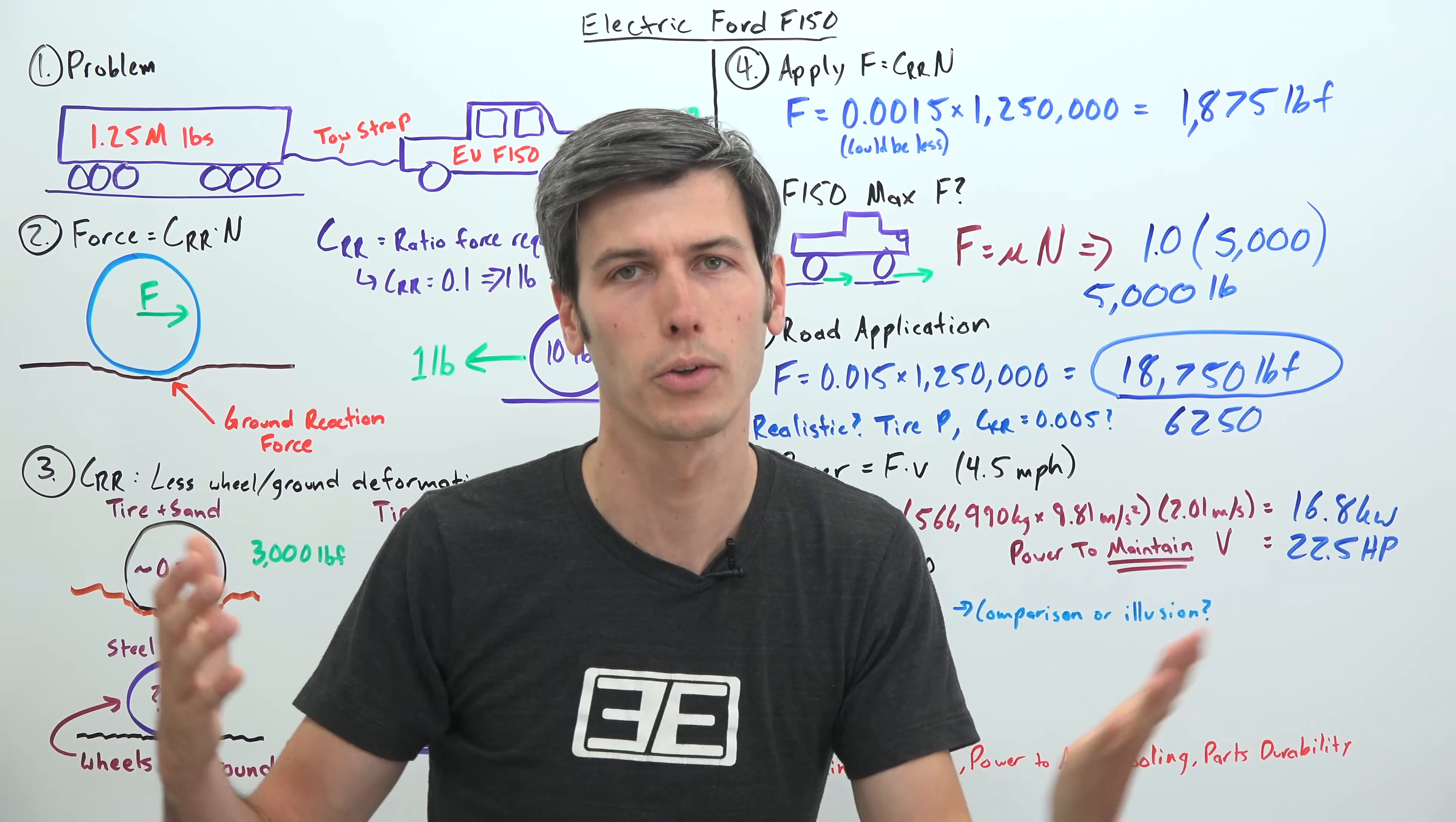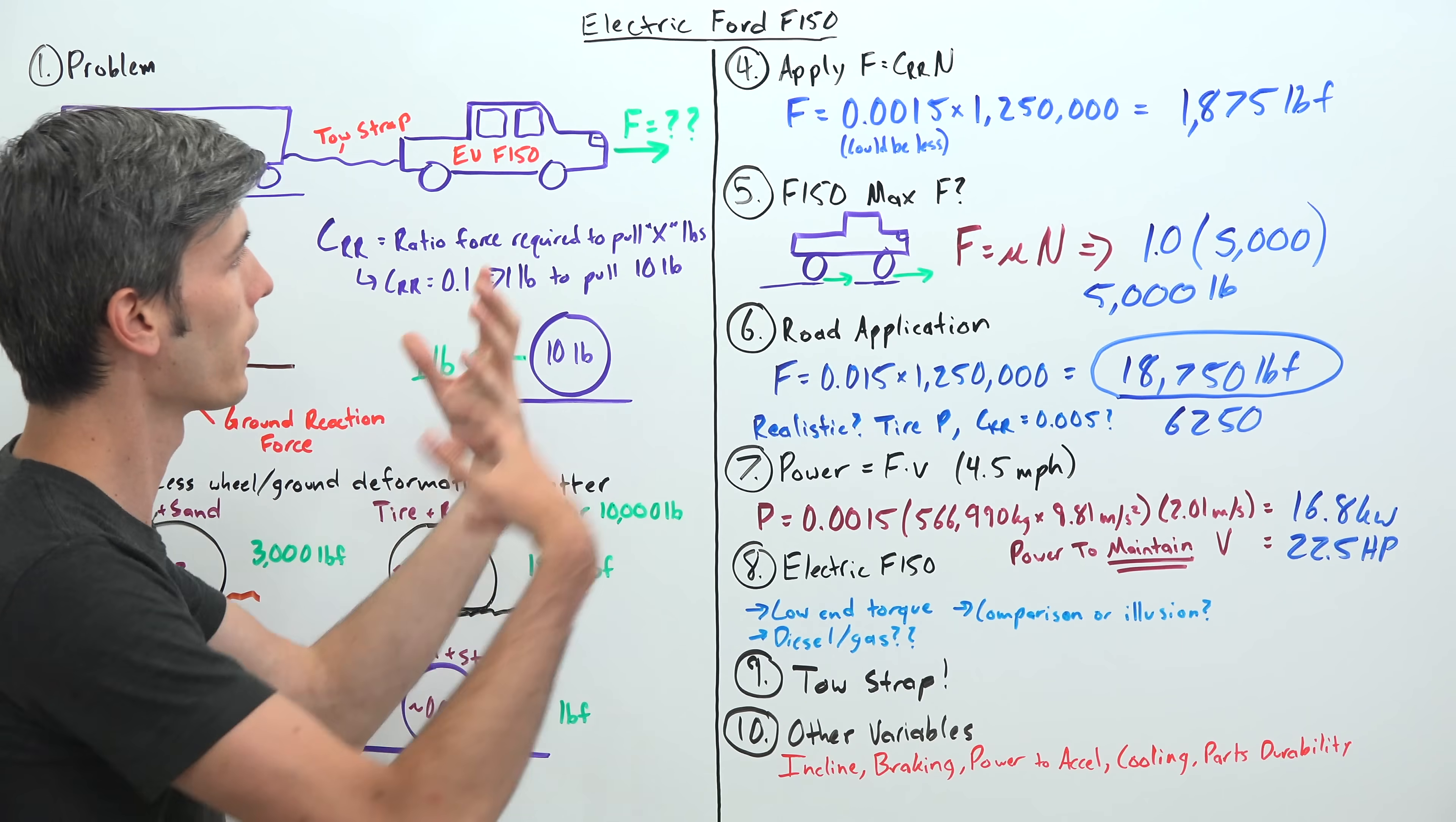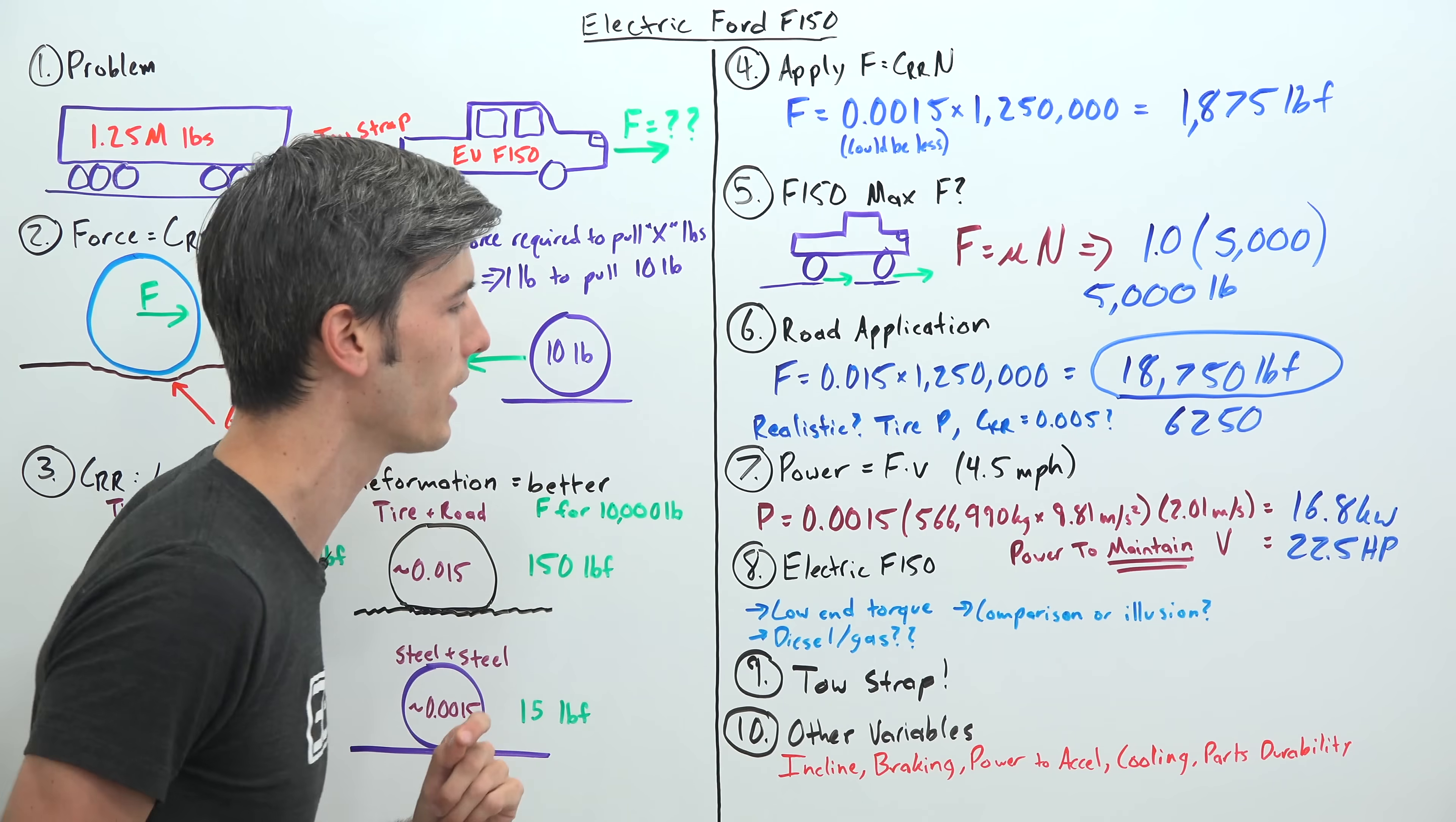Also, you're going to need a ton of power to be able to accelerate. You need an insane amount of cooling if you're going to be making all that power. You can get the thing moving, it's just going to take forever to do it. A low force will work, it just means you're going to accelerate slowly. And then of course, the parts durability of everything involved in order to pull a mass that high is going to be quite insane. So all of the other variables, I think, are kind of boring but feel like worth mentioning. So we're throwing them in there at the end.